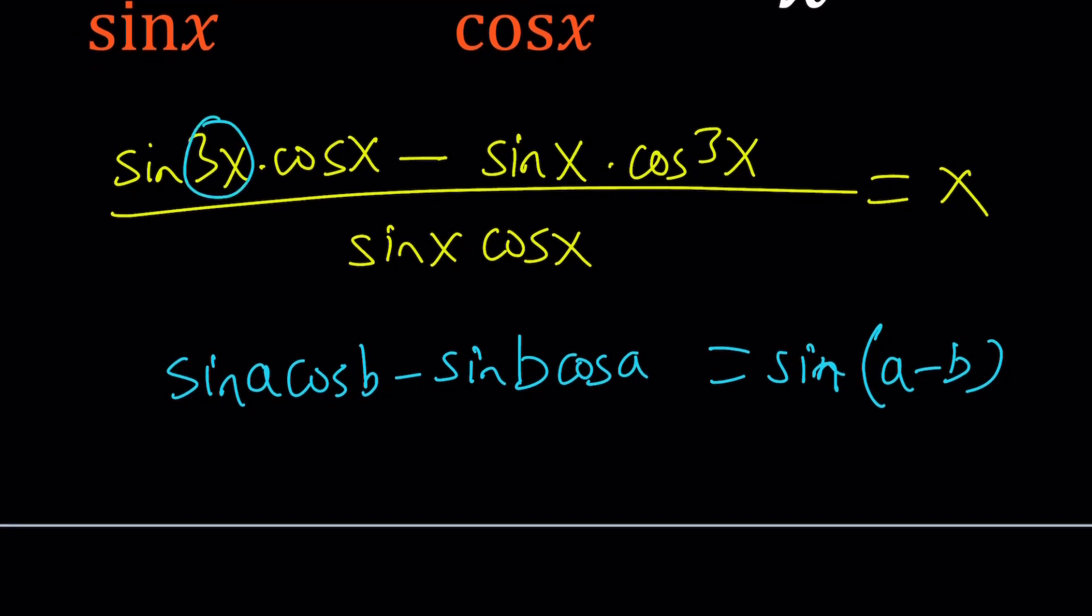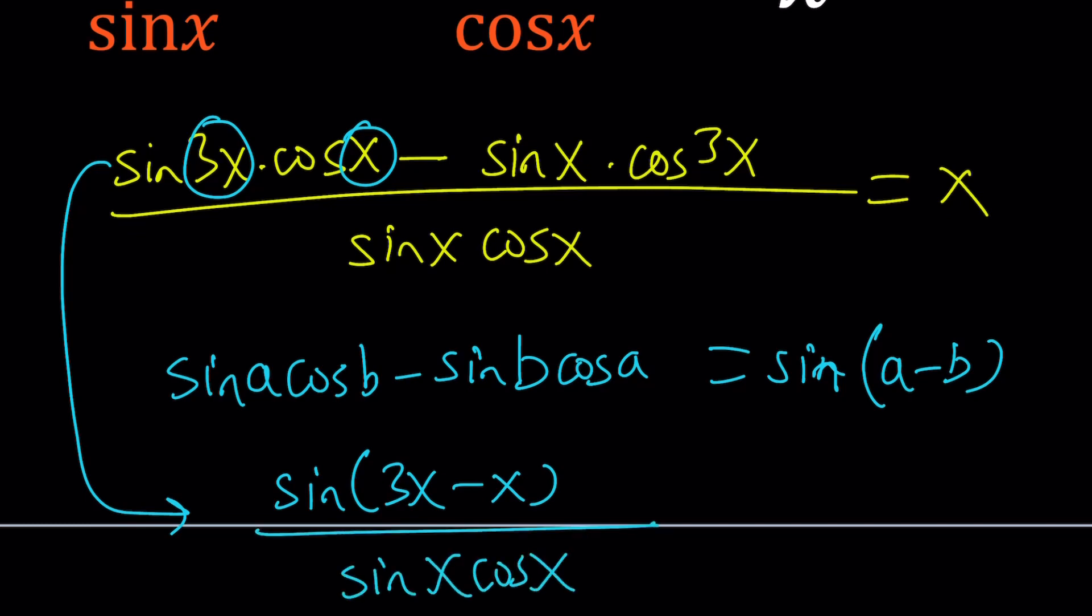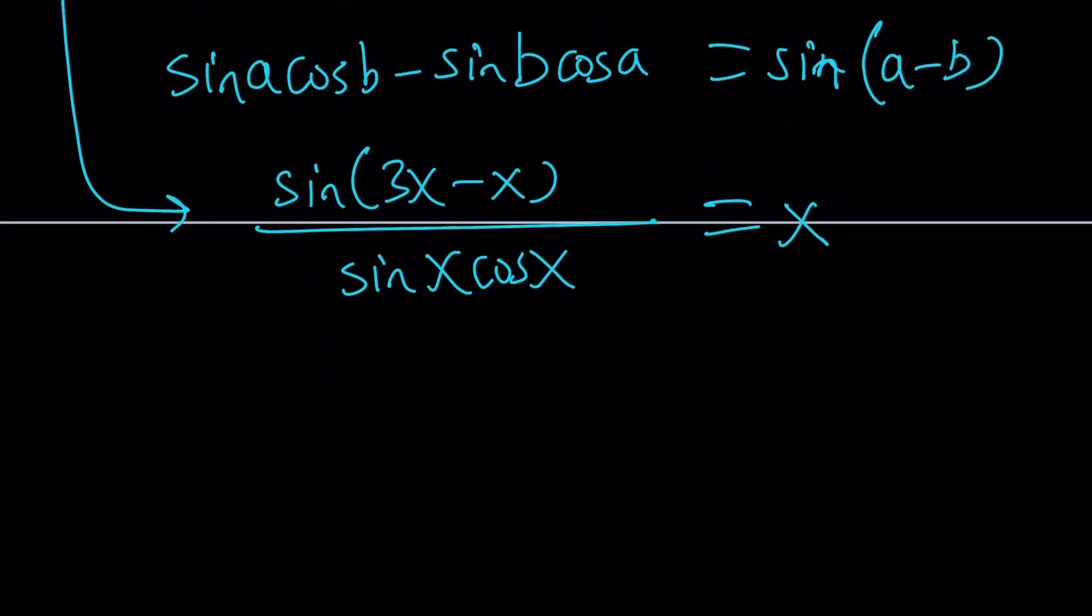Now, from there, my a's and b's are going to be 3x and x. So, this is going to turn into sine 3x minus x. Great. Divided by sine x cosine x. As is, it doesn't look nice, I know. But we're going to make it much, much nicer. Ready? Now, notice that 3x minus x is equal to 2x. So, I can just go ahead and write it as sine of 2x.